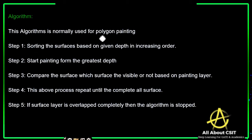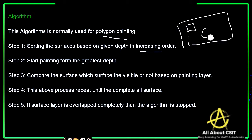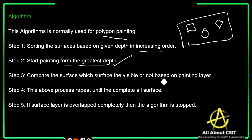This algorithm is normally used for polygon painting. The steps are: first, sort the surfaces based on depth in increasing order. Then start painting from the greatest depth — the farthest object. Compare each surface to determine visibility based on the painting layer. Repeat this process until all surfaces are completed. If a surface layer is completely overlapped by another object, stop the algorithm at that point.